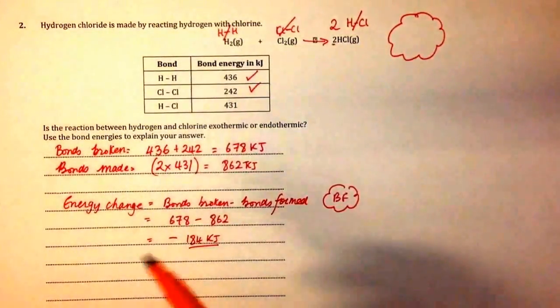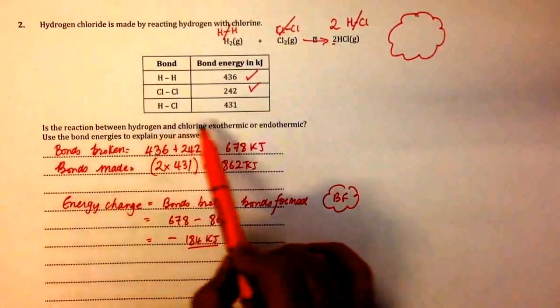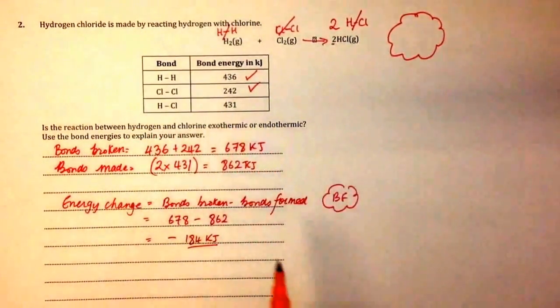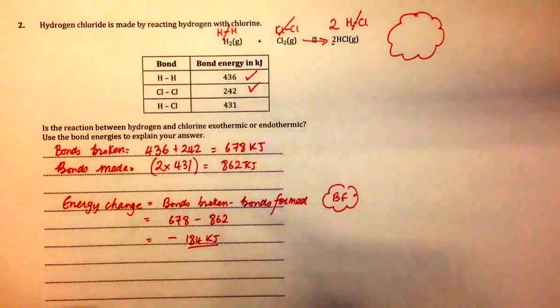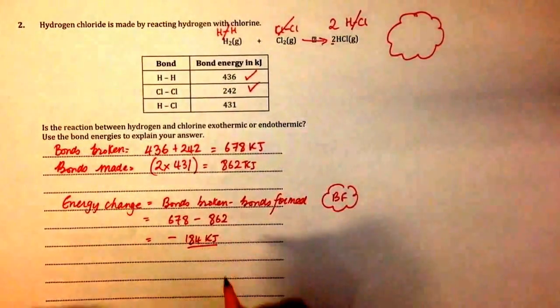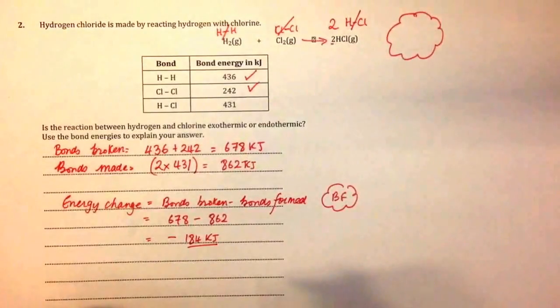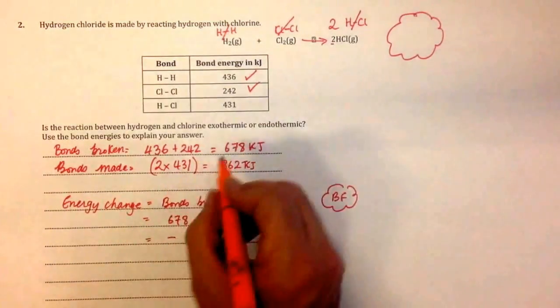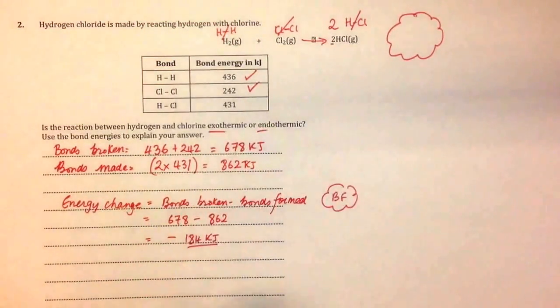Going back to what the question is asking: is the reaction between hydrogen and chlorine exothermic or endothermic? Use the bond energies to explain your answer. Well, if we look, we've got a value for it - 184 kilojoules. But we can tell if it's exo or endo because there's a negative sign.